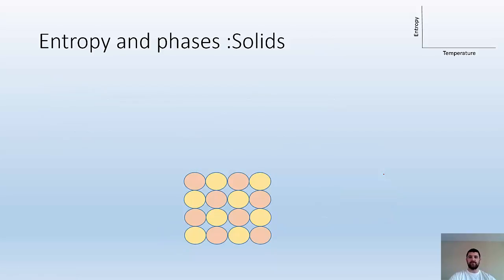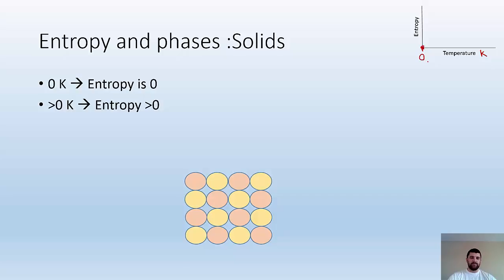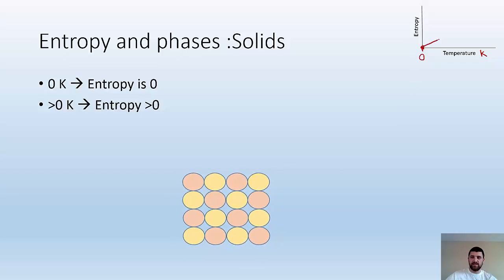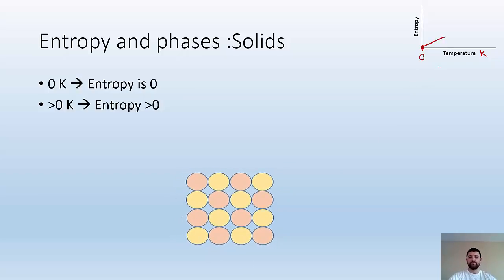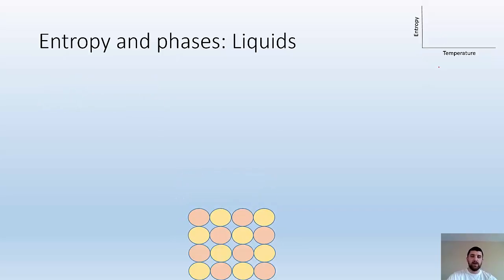So let's take a look at entropy and phases. We're going to start with the solids. So at zero K, entropy is zero. So you can see up here I have a graph where I have entropy and the temperature is going to be in Kelvin. So at zero Kelvin, we have zero entropy. At anything above zero Kelvin, we're going to have entropy greater than zero. We're going to start heating it up. It's going to start moving around and that's going to introduce some chaos. So as we heat it up, the entropy is going to increase.